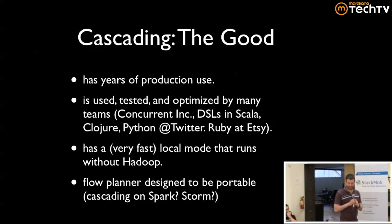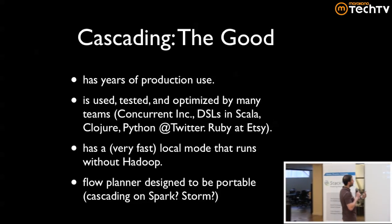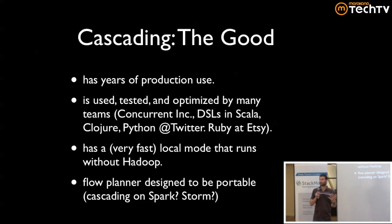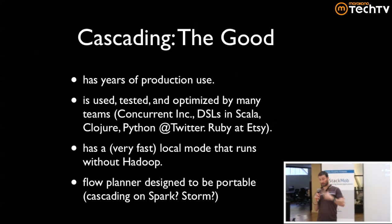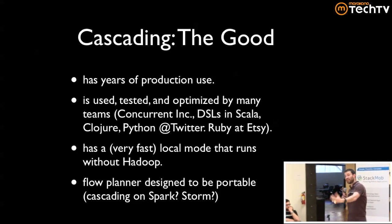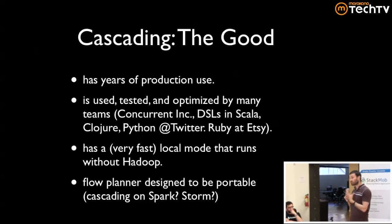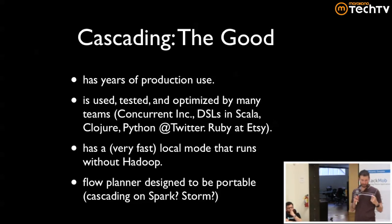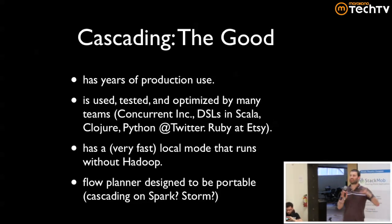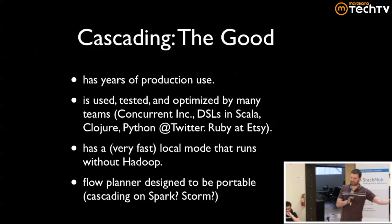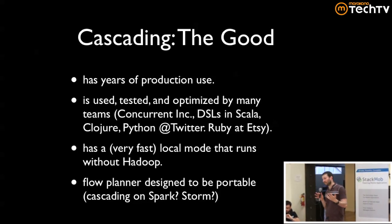It's got a fast local mode — what I just showed you was not using Hadoop at all. So you can use Scalding or Cascading on your cluster and write the same job and run it locally. That's really handy — it's a real pain when you use something on your cluster and then bring it into R or Excel locally. That impedance mismatch is no fun.